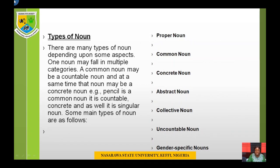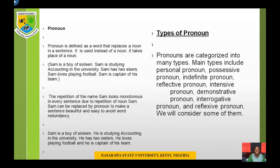There are many types of noun depending upon some aspects. One noun may fall in multiple categories. A common noun may be a countable noun and at the same time a concrete noun. For example, pencil is a common noun — it is countable, concrete, as well as a singular noun. Some main types of noun are: proper noun, common noun, concrete noun, abstract noun, collective noun, uncountable noun, and gender-specific nouns.